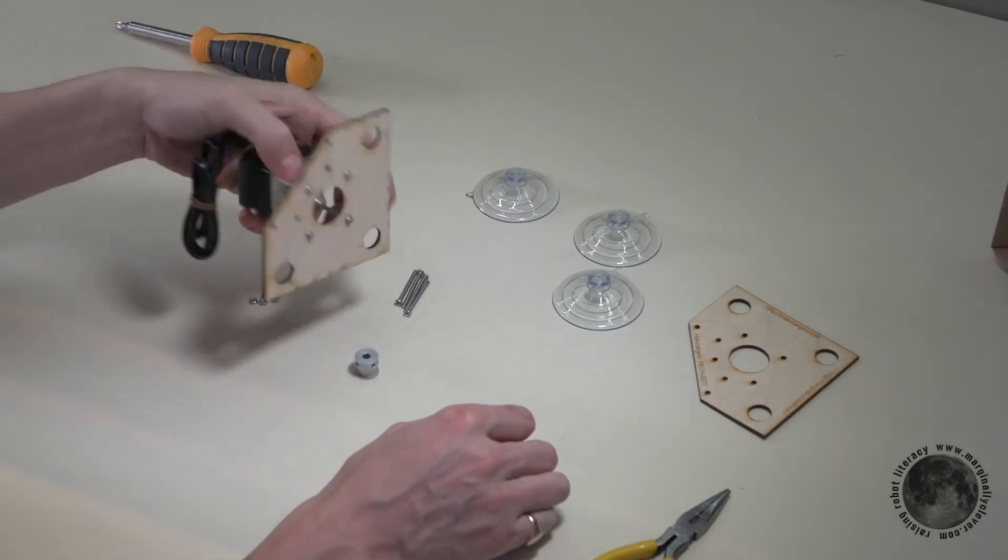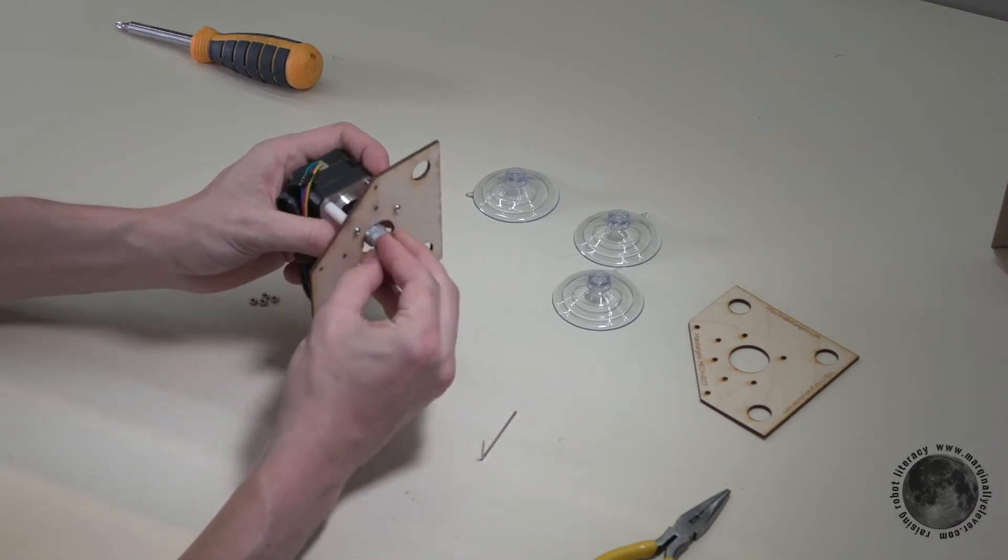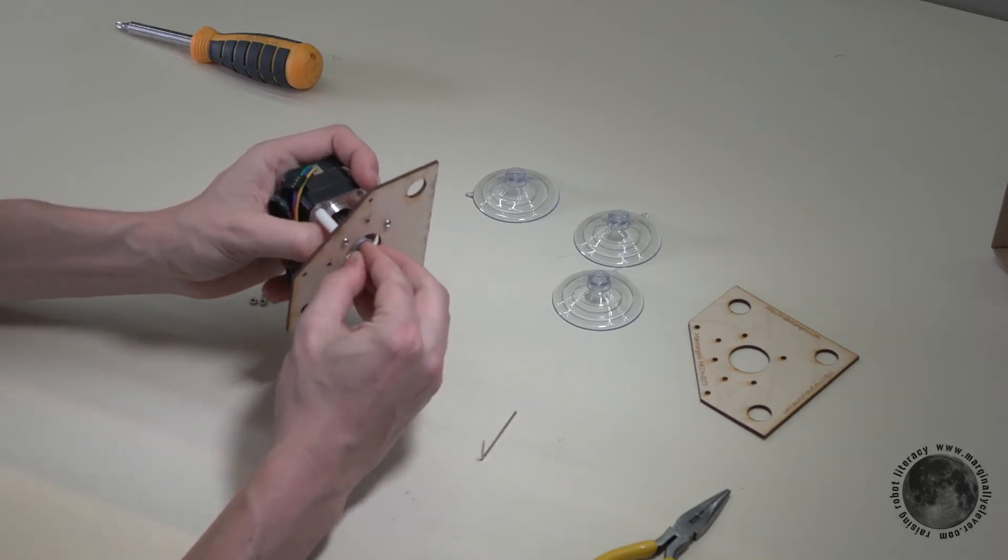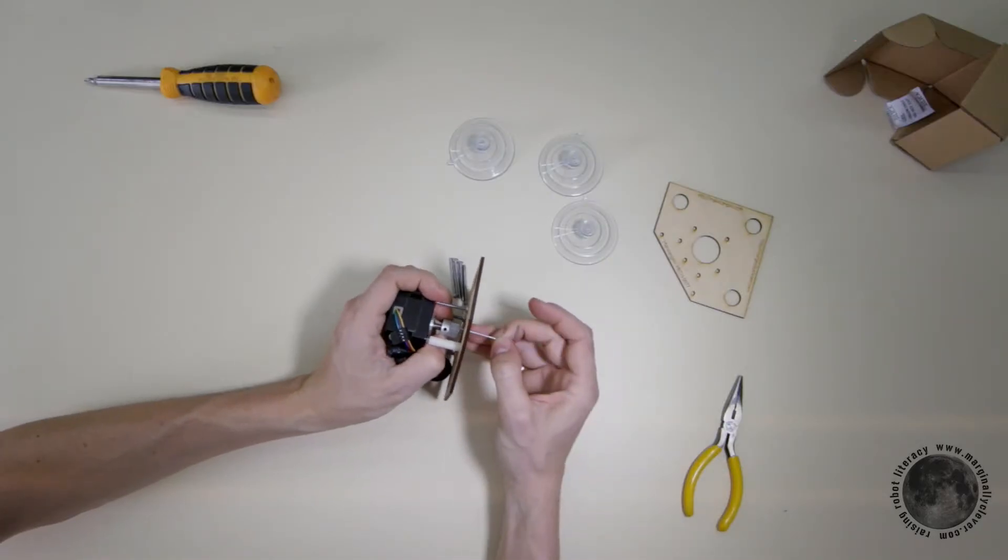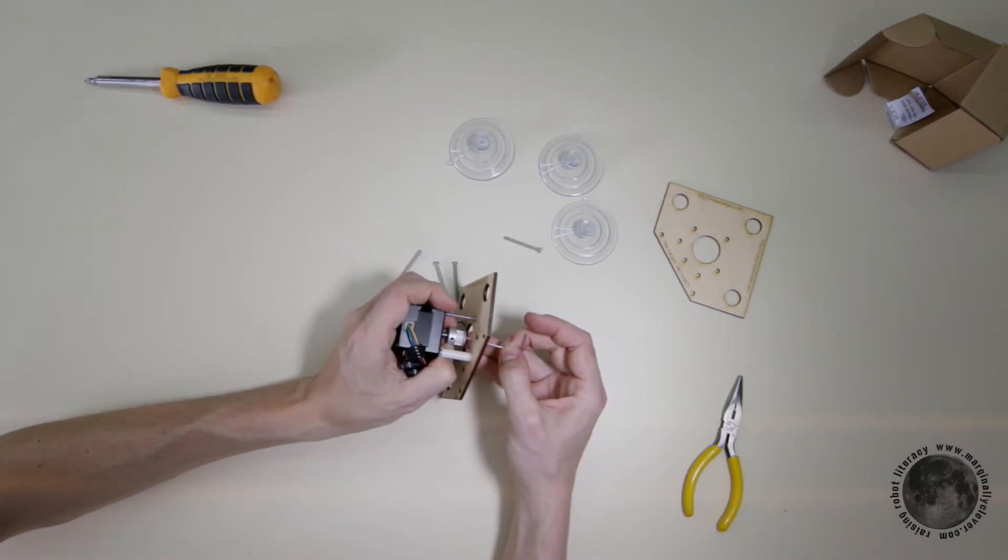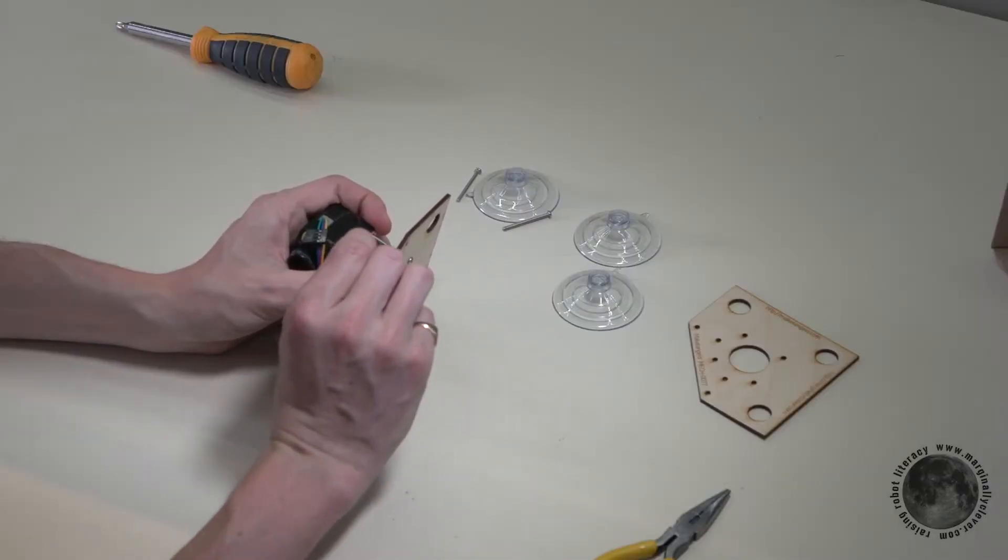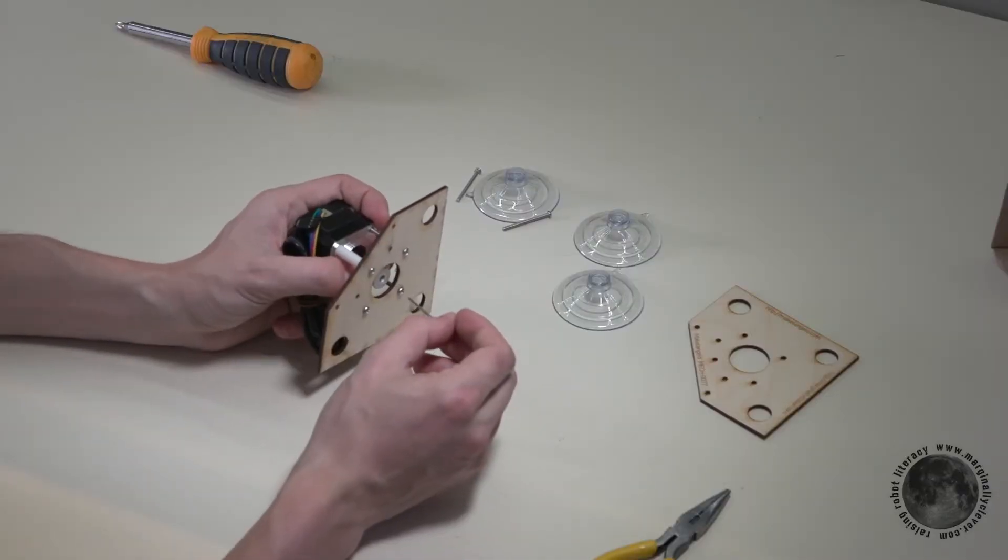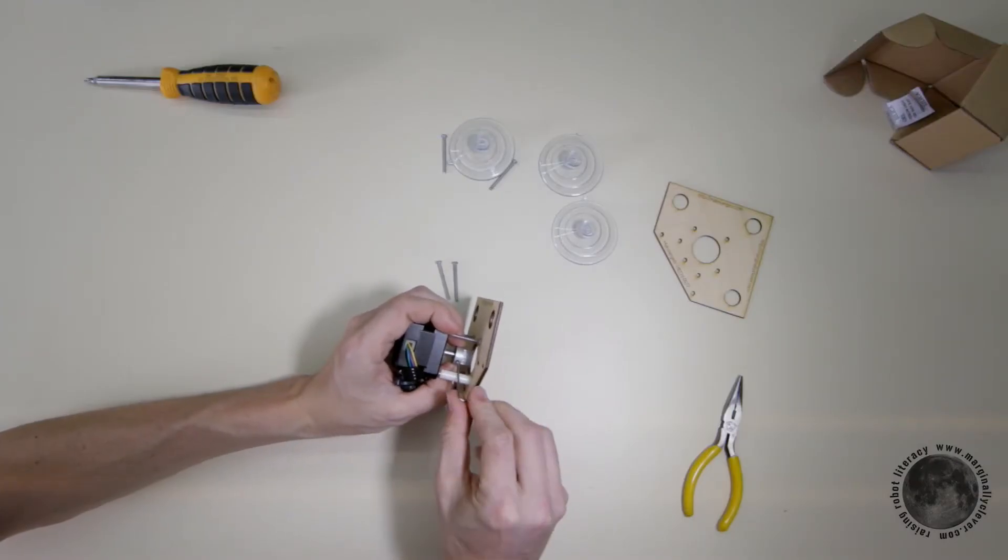Now, the pulley goes on the flat and notice how the edge here, the edge I'm pointing to with the Allen key, the bottom edge, you want it as close to the wood as possible. And then tighten, tighten, tighten.